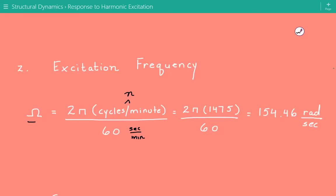So it's 2π times 1475 divided by 60. And the excitation frequency comes out to be 154.46 radians per second.